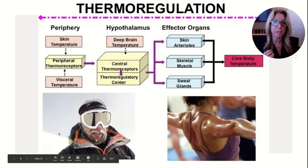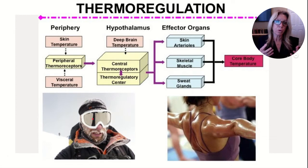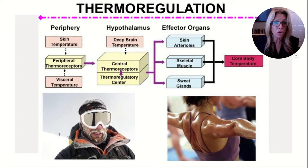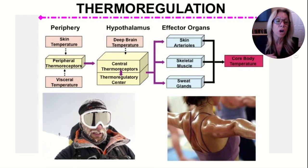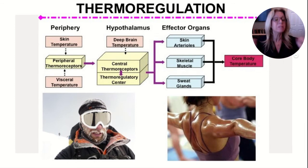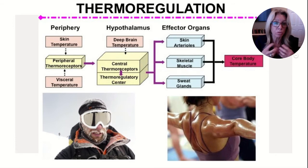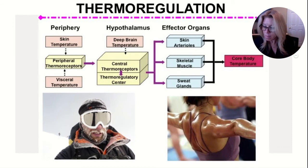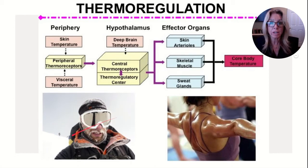Thermal regulation: when you're cold, you shiver — that's a physiological response. A behavior would be walking over and putting on a jacket. Same thing when hot: sweat, take off the jacket. These are behavioral responses to temperature changes. Physiologically, strategies to regulate body temperature and metabolism are part of homeostatic regulation.